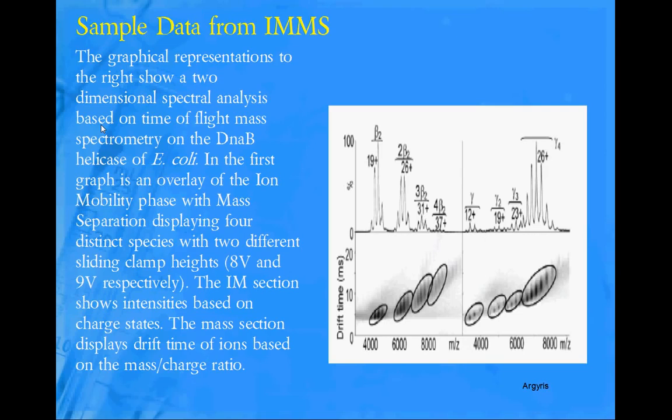You can see that the most common form was the beta 2, and on the right the most common form was a gamma 4. You can see the intensities in both the ion mobility phase and the mass spec phase. They are both done with respect to the mass to charge ratio.